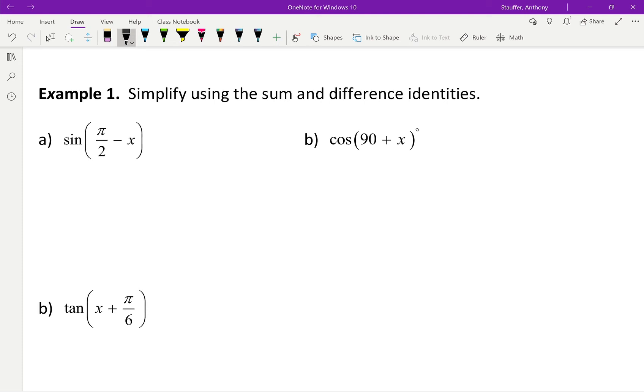But, we have sine pi by 2 minus x. So, using the identity from above, it's sine a cos b minus cos a sine b. So, I get sine pi by 2 cos x, all minus cos pi by 2 sin x, which would give me 1 multiplied by cos x minus 0 multiplied by sin x. Again, I'm getting these values from the unit circle, so that would just end up equaling cos x.